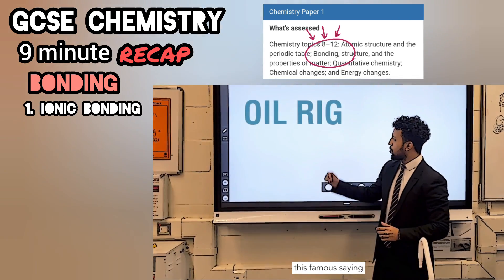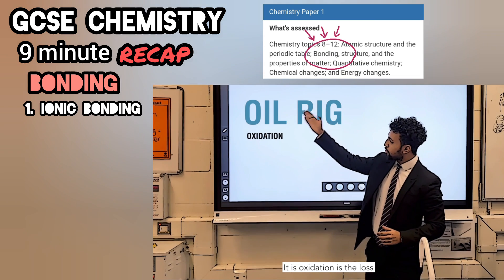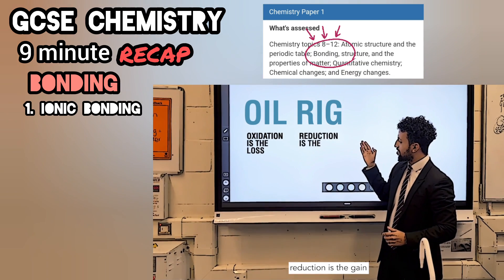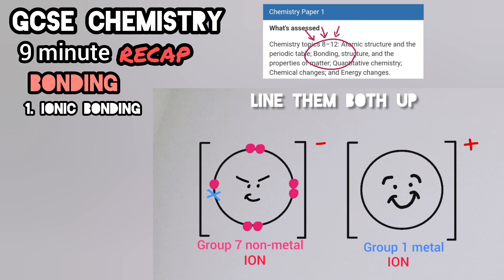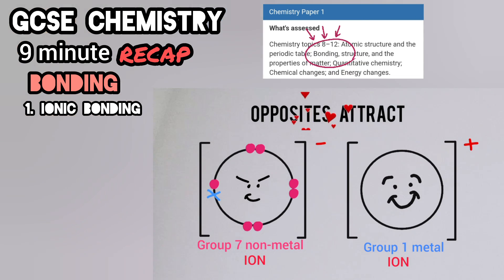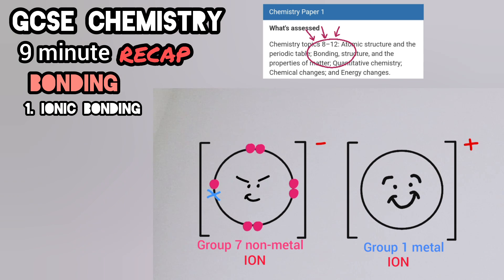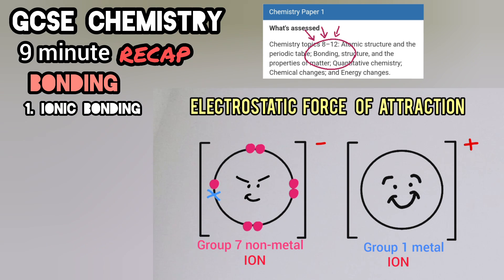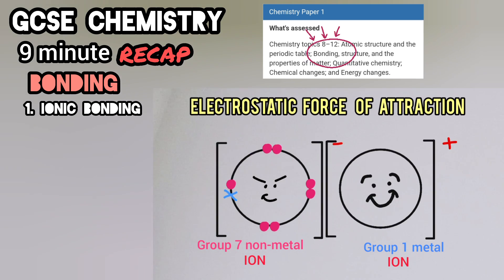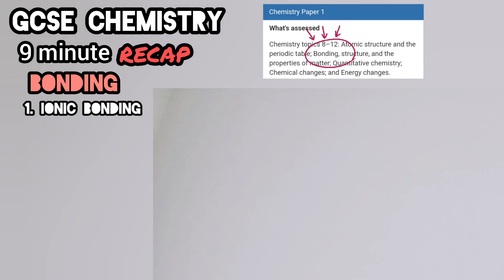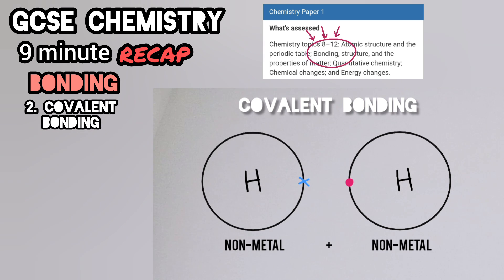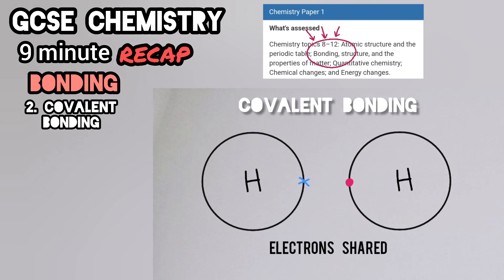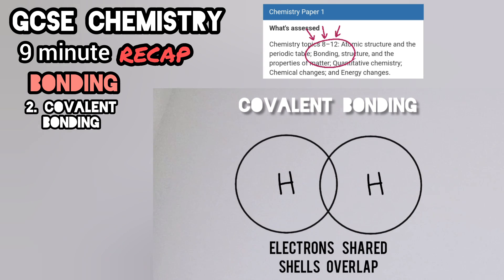OIL RIG — I'll leave you with this famous saying: oxidation is the loss, reduction is the gain. Ionic bonds form through electrostatic force of attraction. Now when two non-metals bond, this is covalent — electrons are shared. They have the shells overlap and you put paired electrons in there.